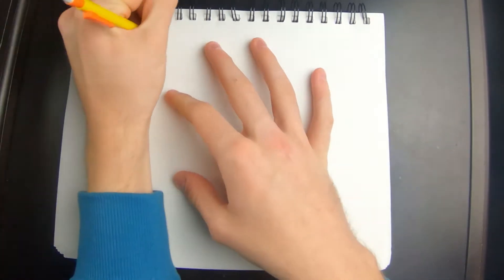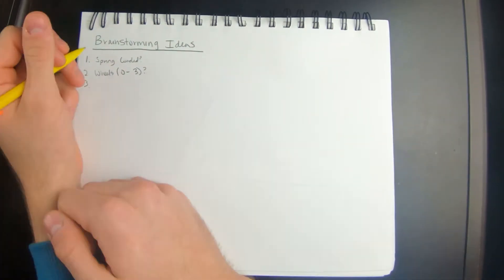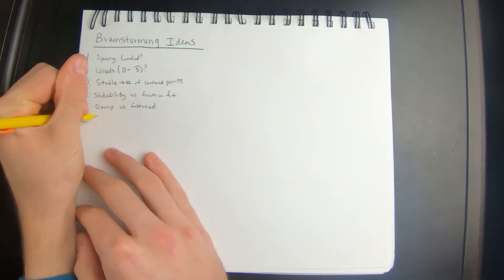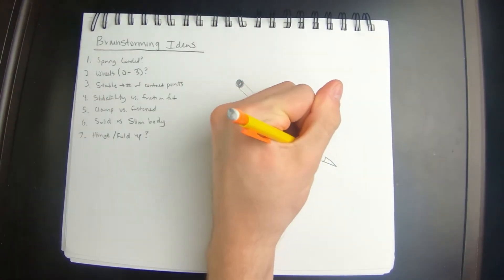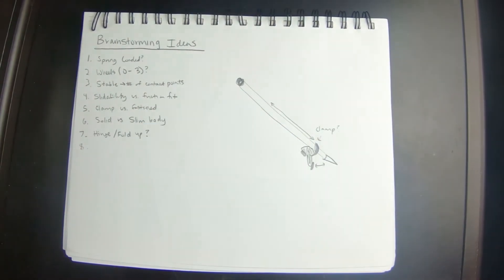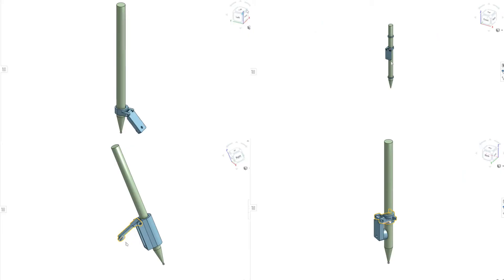With these criteria established, it was then time to brainstorm possible design concepts that could be used for the product. I started by creating a long list of various components and design concepts that could potentially work. During this stage, I wrote down various ideas which included possibly having a spring loading mechanism, a way for the pencil attachment to become more compact, whether I should include wheels, and also how I could incorporate a sliding ability to the design.